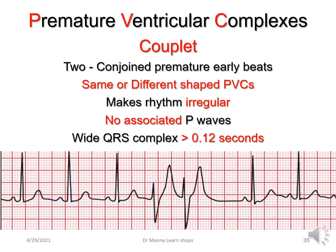Then you've got couplets. Couplets basically means a couple — so two PVCs together. They can be unifocal and look the same, or they can look different. Because they're together, they're a couple — they can be the same or different shaped PVCs. They do make the rhythm irregular, still have no P-waves associated with them, and are wide complex, more than 0.12 seconds. They can indicate more severe pathophysiology.